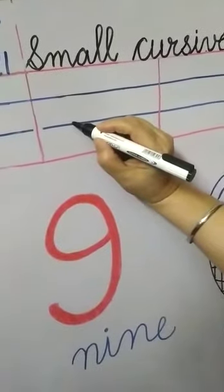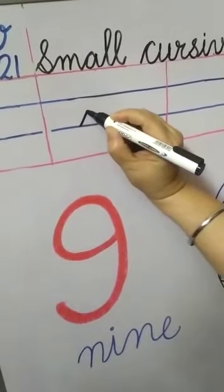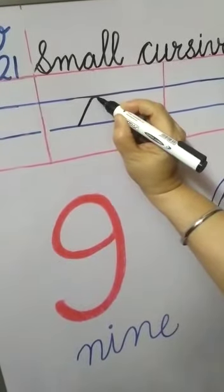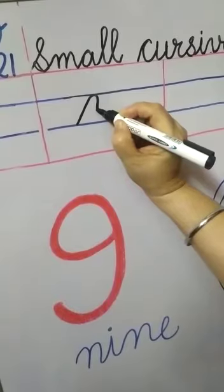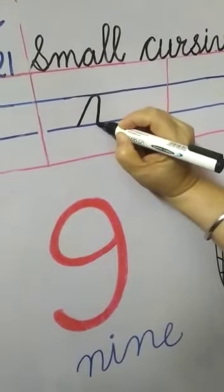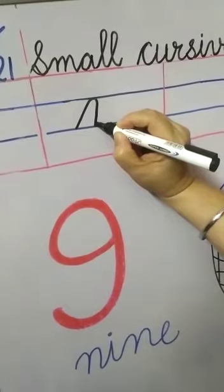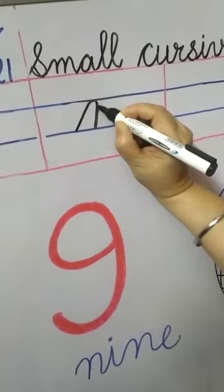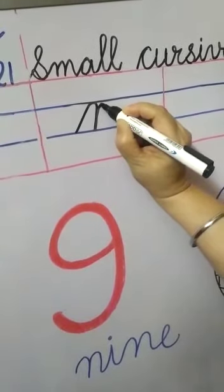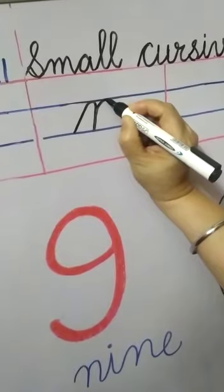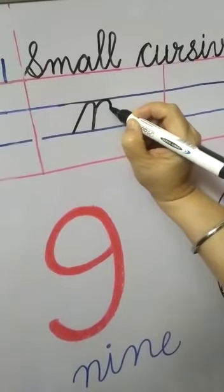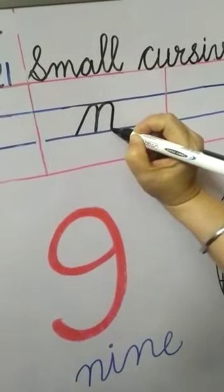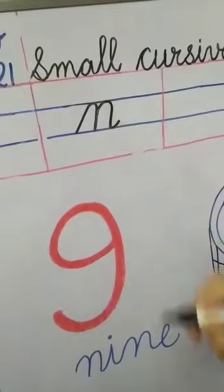Now second step — start from the lower blue line, go slantingly up to the upper blue line. Touch here, make a small round and come little bit slantingly down up to the lower blue line. Touch here again, go upwards on our same line. After reaching near the upper blue line, go slantingly up to the upper blue line. Touch here, make a round again, come little bit slantingly down up to the lower blue line. Touch here, make a small round and come little bit up.